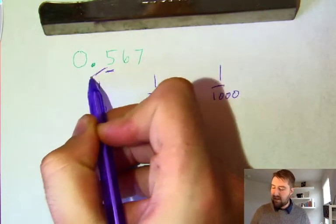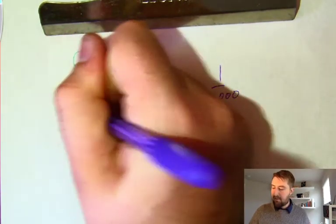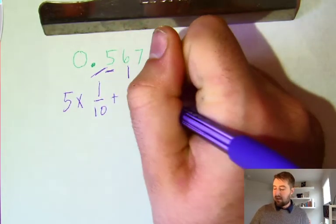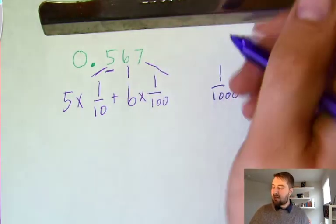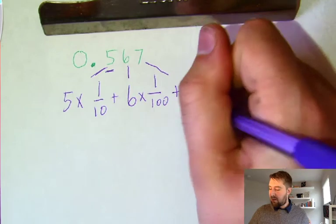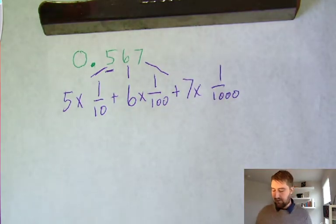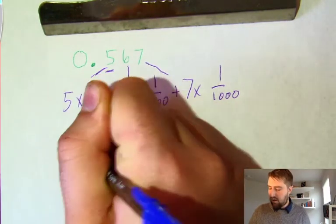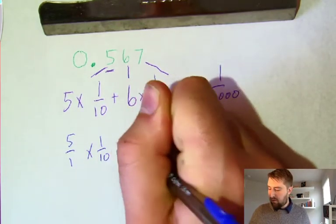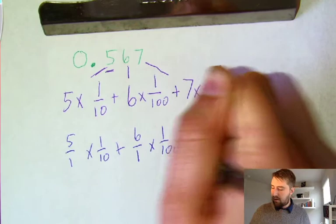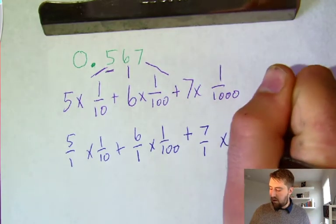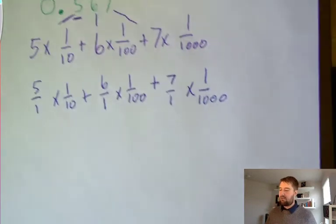The six is in the hundredths place, so we write one one-hundredth. The seven is in the thousandths place. So: five times one-tenth, plus six times one-hundredth, plus seven times one one-thousandth. Since we've already talked about multiplying fractions, we put a one under each digit: five over one times one over ten, plus six over one times one over one hundred, plus seven over one times one over one thousand.